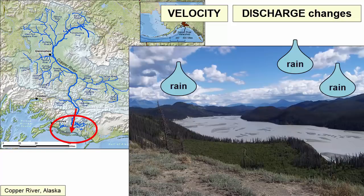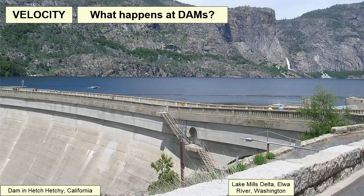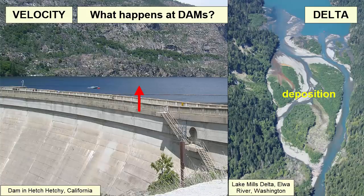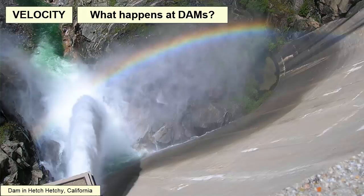Discharge also changes throughout the seasons as the amount of rain and snowmelt varies. If we erode through a drainage divide and increase the area of a drainage basin, that should also lead to greater discharge. Dams across a river stop the flow, meaning sediment is dropped at the mouth of the river as it enters the lake behind the dam. Sediment dropped at the mouth of a river where it enters another body of water is called a delta. That delta sediment over time will cause the lake level to rise. Meanwhile, water spilling over the dam downstream has no sediment and falls from great height with great velocity, picking up and eroding sediment immediately below the dam.